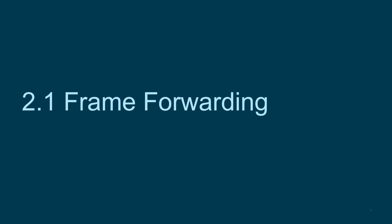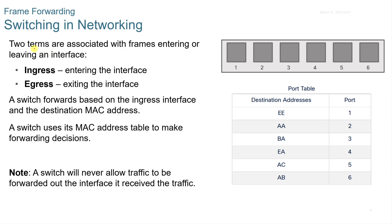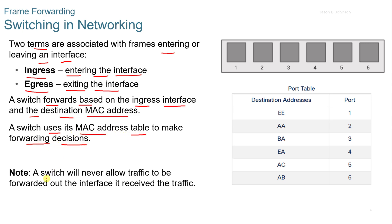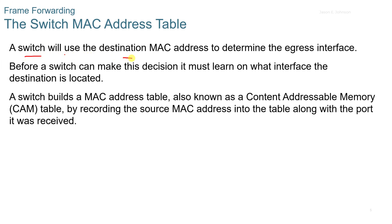2.1 Frame Forwarding. There are two terms associated with frames entering or leaving an interface. Ingress means the frame is entering the interface, and egress means it's exiting the interface. A switch forwards based on the ingress interface and the destination MAC address, using its MAC address table to make forwarding decisions. A switch will never forward traffic out the same interface it was received on.